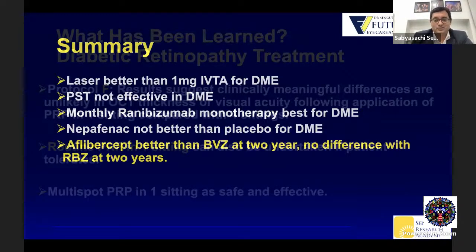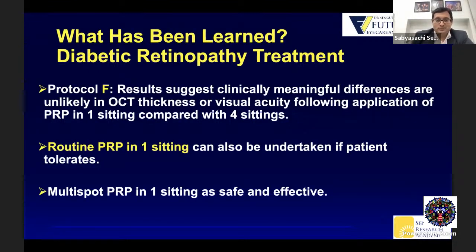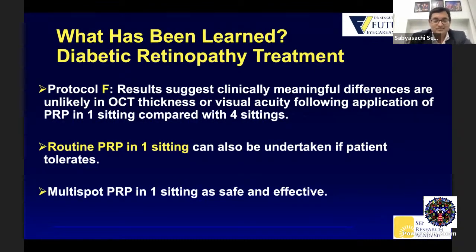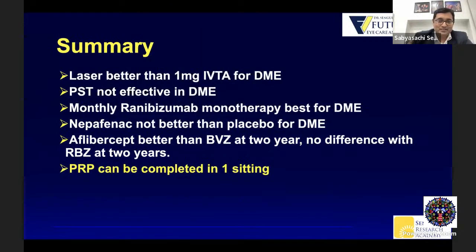Protocol F said that results suggest clinically meaningful differences are unlikely in OCT thickness or visual acuity following application of PRP in one sitting compared with four sittings. Generally we do PRP in three or four sittings, but this study found there is not much difference. Routine PRP in one sitting can also be undertaken if the patient tolerates it. And importantly, multi-spot PRP — now available — in one sitting is safe and effective. So you need not keep calling patients back for three sittings. The summary: PRP can be completed in one sitting.